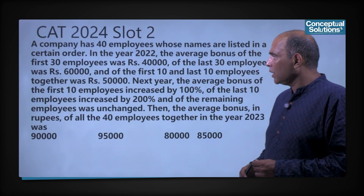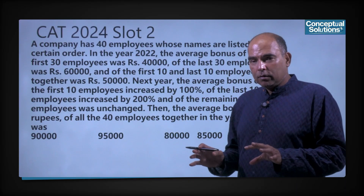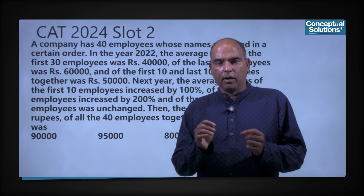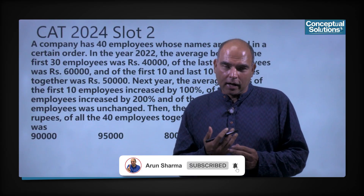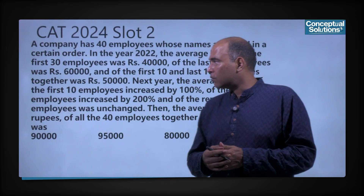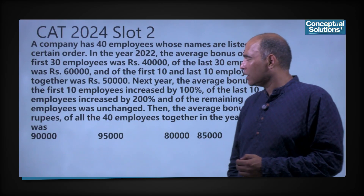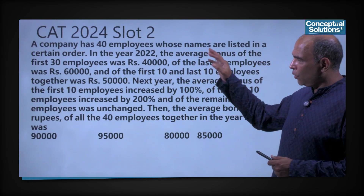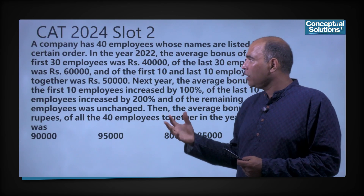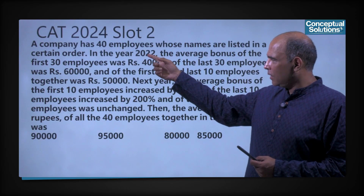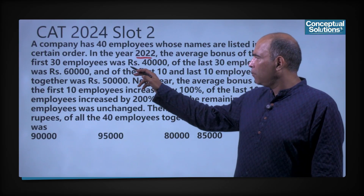Let's look at this question. The question says the company has 40 employees whose names are listed in a certain order. Every question has triggers and reactions, and I always talk about understanding what the triggers are and reacting correctly. In this question, the only information given so far is the number of employees — 40 — and there's no trigger to do anything yet. The next statement: in the year 2022, the average bonus of the first 30 employees was 40,000.